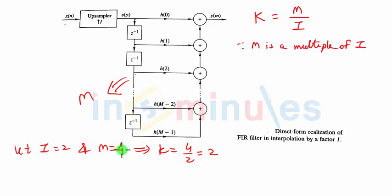In this case K is equal to 2 and M is equal to 4, so out of 4 only two values will be nonzero, which is true because I is equal to 2. If I is equal to 2, I will insert 1 zero between the two samples. So if I take total four samples there will be two nonzero samples and two zero samples. So there will be two nonzero samples in every four samples and hence the remaining two will be the zero samples.